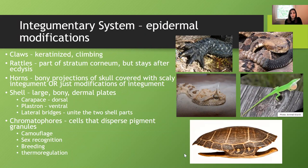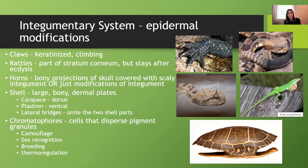The turtle shell is made of large bony dermal plates. The carapace, which is the dorsal portion of the shell, is actually fused to the skeleton — to the ribs — so it's part of both the skeleton and the epidermis. The plastron is the ventral piece of the shell, and the lateral bridge connects the two shell parts. Chromatophores are the cells that hold pigment. They can disperse pigment granules and move and shift, causing color change important for camouflage, sexual recognition, breeding, and thermoregulation.